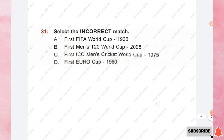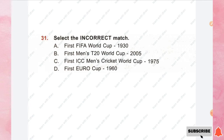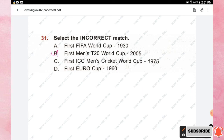The next section is the Achiever section. Question number thirty-one: select the incorrect match. Options are First FIFA World Cup held in 1930, First Men's T20 World Cup held in 2005, First ICC Men's Cricket World Cup held in 1975, and First Euro Cup held in 1960. The incorrect match is option B, First Men's T20 World Cup 2005.